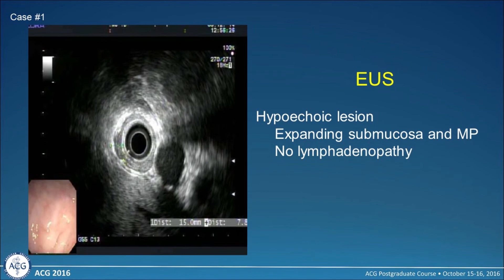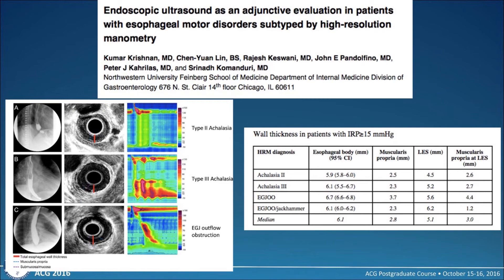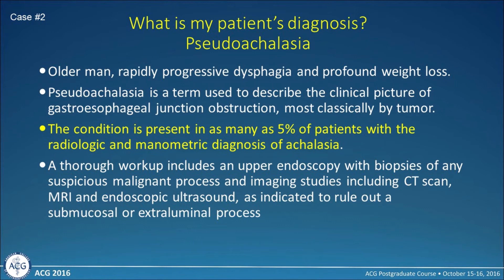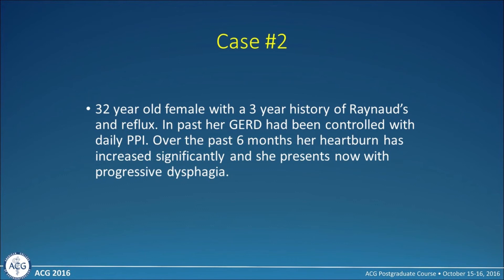I chose to do an endoscopic ultrasound because of the abnormality. There was expansion of the submucosa and muscularis propria but no lymphadenopathy, and FNA came back as a carcinoma. There was a recent study showing EUS as a nice adjunctive tool after high-resolution manometry. The diagnosis is pseudoachalasia — a term describing the clinical picture of EGJ obstruction, most classically by tumor. It can present in 5% of patients with a radiologic and manometric diagnosis of achalasia. A thorough workup implores us to continue testing even if some was done previously.